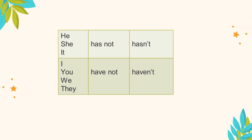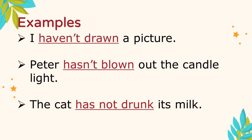We say: he has not, she has not, it has not — or we can use the contraction form: hasn't. I have not, you have not, we have not, they have not — or we can use the contraction form: haven't. Example: I haven't drawn a picture, or we can say I have not drawn a picture.